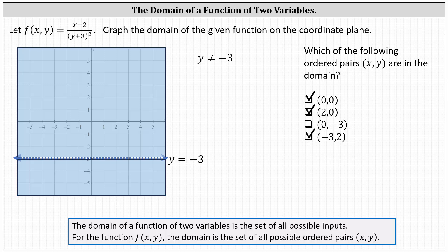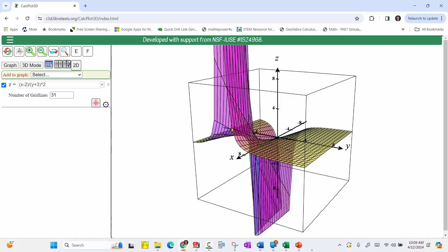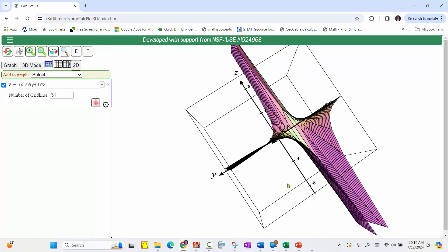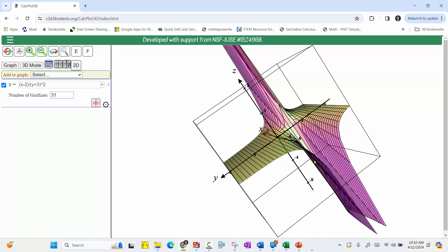Before we go, let's take a look at the graph of the given function. Here's the graph of the given function in space. Notice it does appear as if the function does have a discontinuity, and it does occur at y equals negative three.